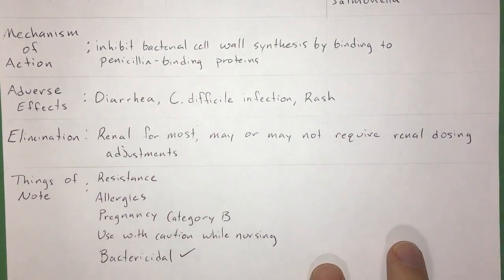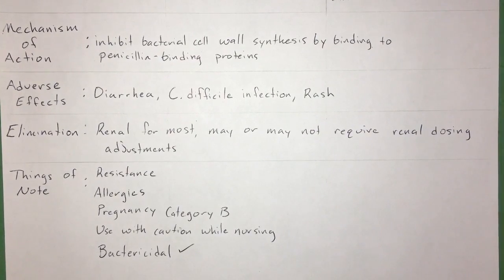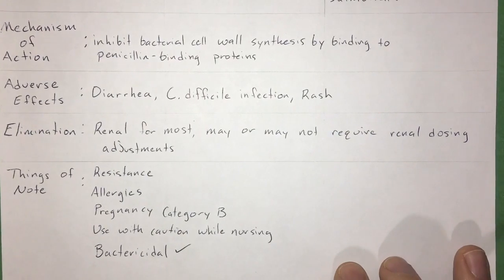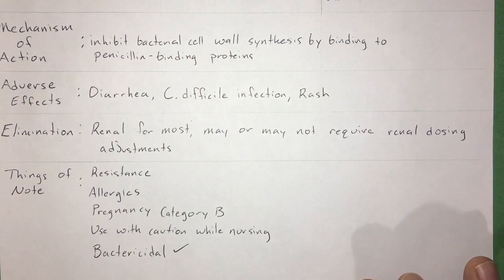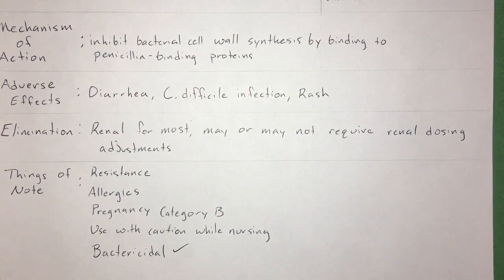The way that these antibiotics work is through an inhibition of the bacterial cell wall synthesis by binding to penicillin-binding proteins, and it makes them bactericidal. Some adverse effects are diarrhea, C. difficile infection which can also lead to diarrhea, and rash.